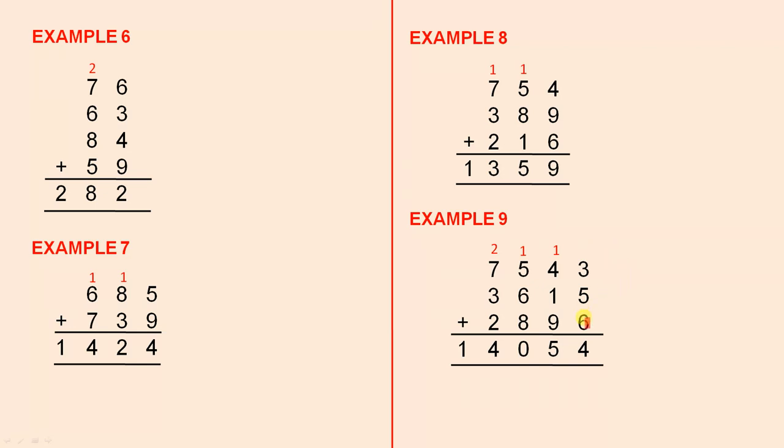Example 9, 6 plus 5 is 11, plus 3 is 14, 4 ones and 1 ten. 9 plus 1 is 10, plus 4 is 14, plus 1 is 15. There's your 5 and there's your 1. 6 plus 8 is 14, plus 1 is 15, plus 5 is 20. There's your 0 and there's your 2. 3 plus 2 is 5, plus 7 is 12, plus 2 is 14. So it's 14,054.